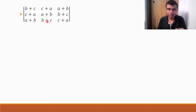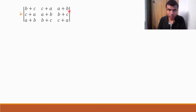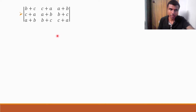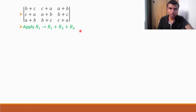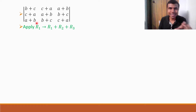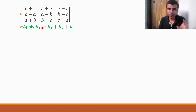Likewise, if the same operation happens for the other row elements, I'd keep getting 2A plus 2B plus 2C — it comes again and again. So let's apply R1 implies R1 plus R2 plus R3. I hope you know row operations. Even if you don't know, stay with me. Now, what does R1 implies R1 plus R2 plus R3 mean?